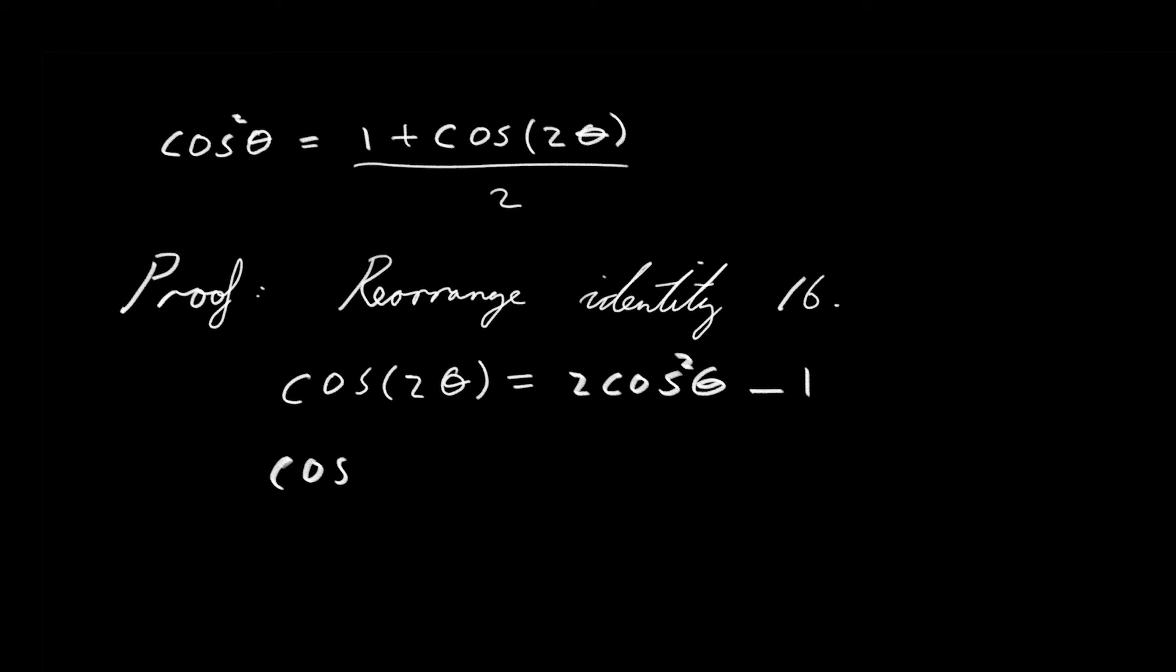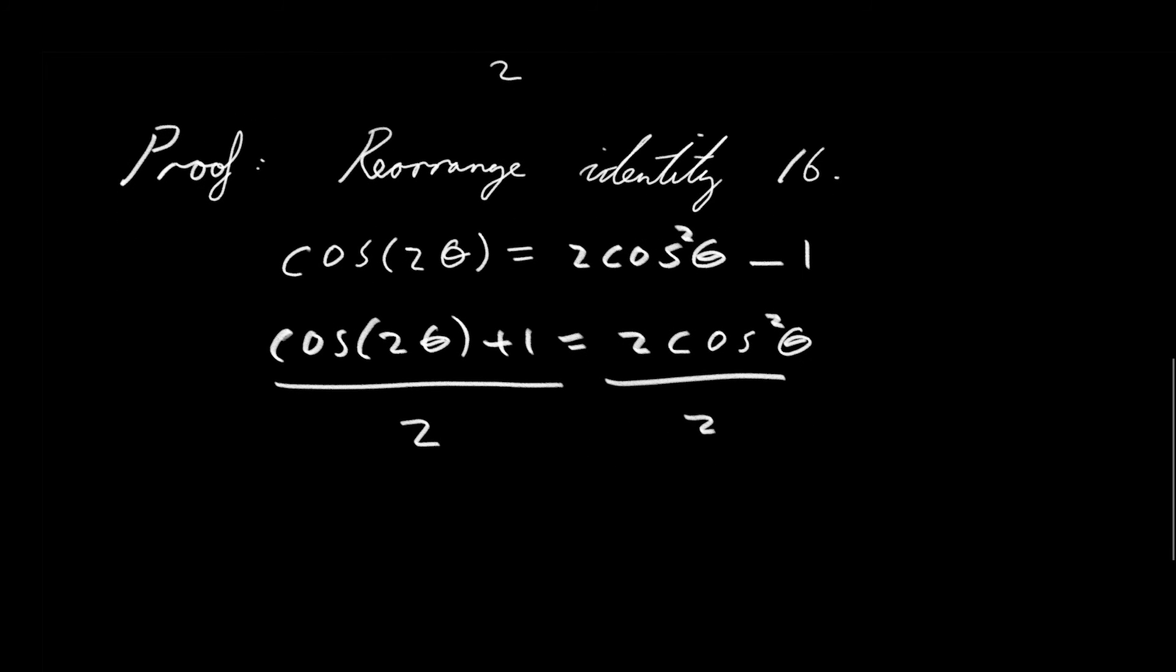Now we just add 1 to both sides. So you have cos(2θ) + 1 = 2cos²θ, dividing by 2 on both sides. And we see we have common factors on the right-hand side, which we can cancel.